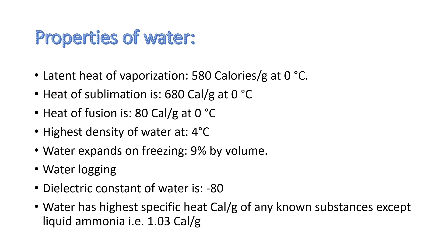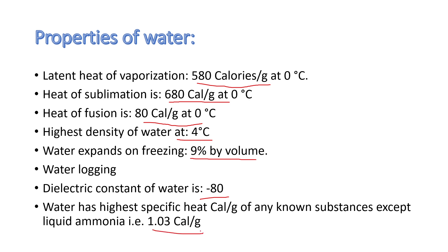Here are some properties of water. Latent heat of vaporization equals 580 calories per gram at 0°C. Heat of sublimation is 680 calories per gram at 0°C. Heat of fusion is 80 calories per gram at 0°C. Highest density of water is at 4°C. Water expands on freezing by around 9% by volume. Dielectric constant of water is 80. Water has the highest specific heat capacity equal to 1 calorie per gram of any known substance, except liquid ammonia which is 1.03 calorie per gram.